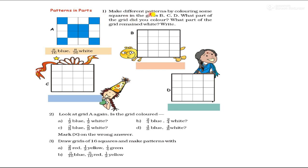Patterns in Parts. Make different patterns by coloring some squares in grids B, C and D. You have to make different patterns by coloring these 3 grids. What part of the grid did you color? What part of the grid remained white? In this 1st grid, there are 16 boxes. Out of 16 boxes, half are blue and half are white — 8 blue and 8 white.